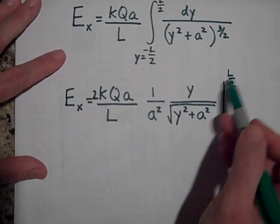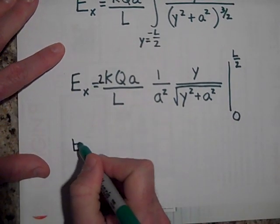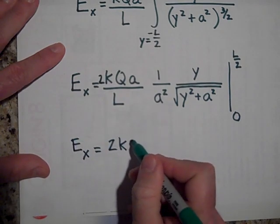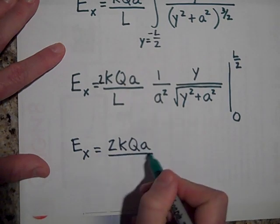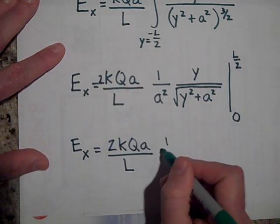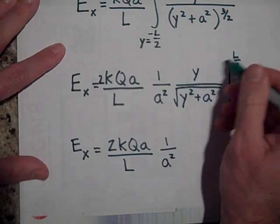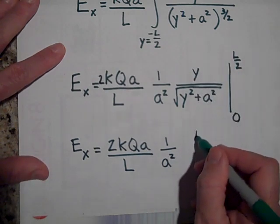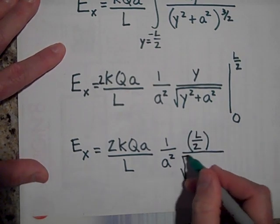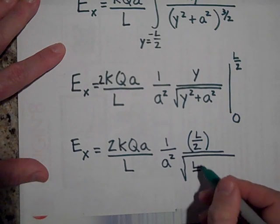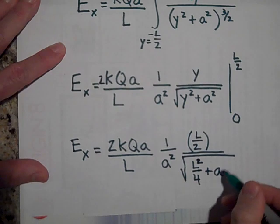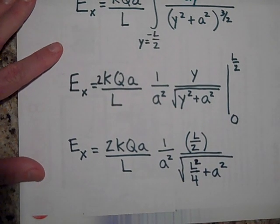The reason I'm doing that is because when you substitute a 0 it's much easier than substituting a negative L over 2, but as I said I need a 2 here then. So let me go ahead and throw in the value then for Y. E in the X direction is 2kQa over L, 1 over A squared. And then for Y I'm going to put in L over 2. And then for this Y I'm going to put in L over 2, but it's squared, so it's L squared over 4 plus A squared.